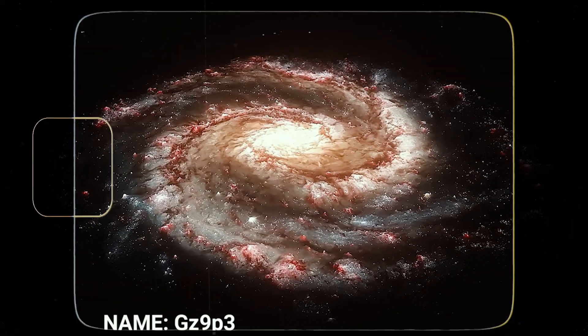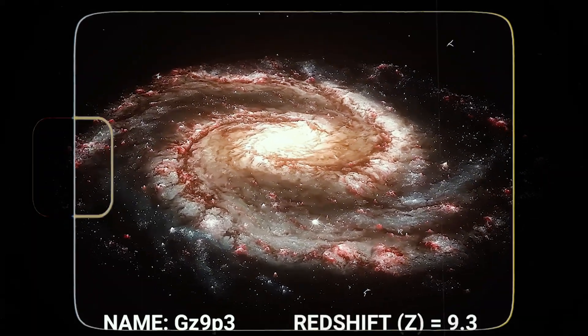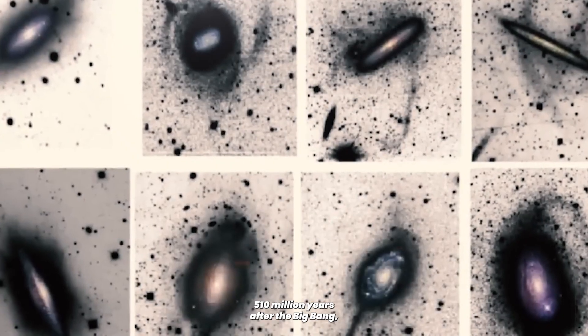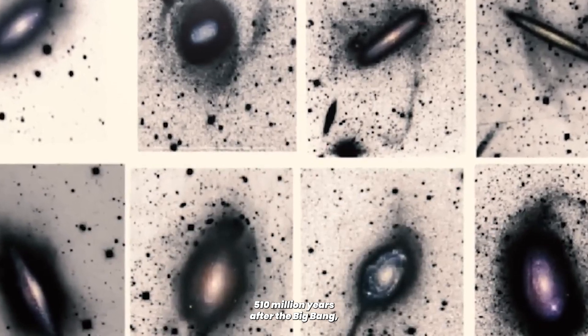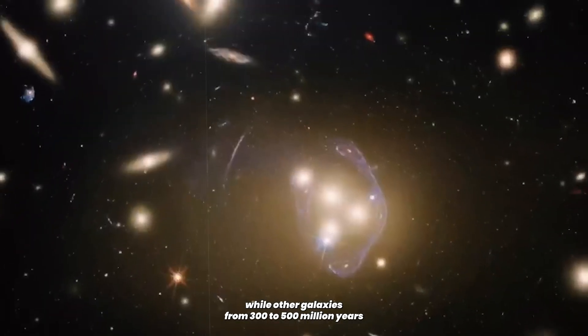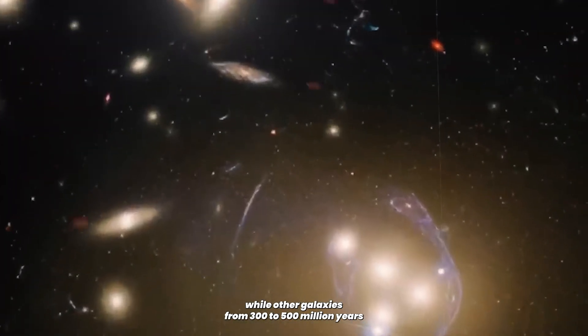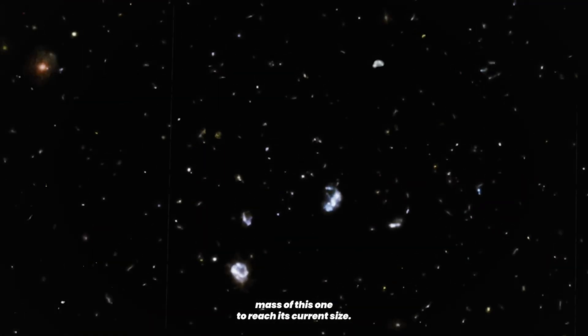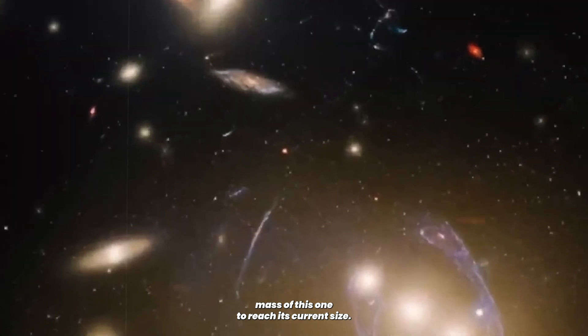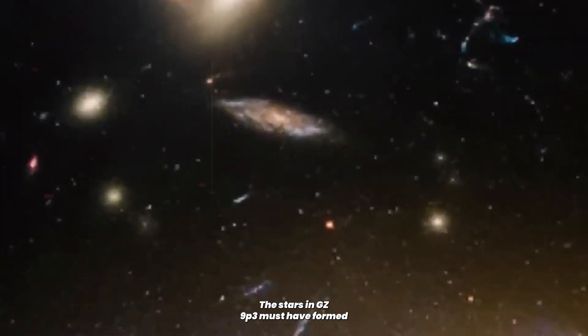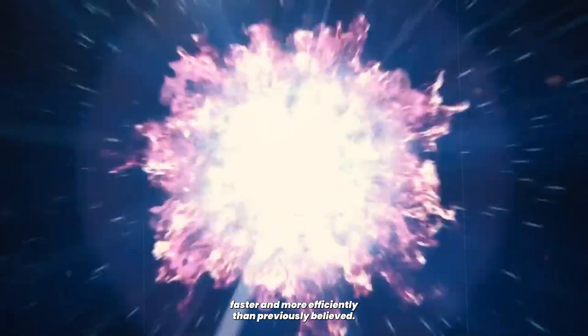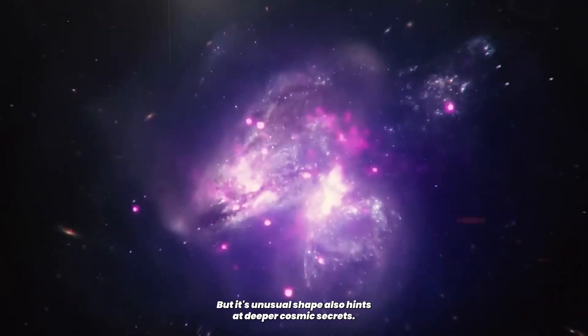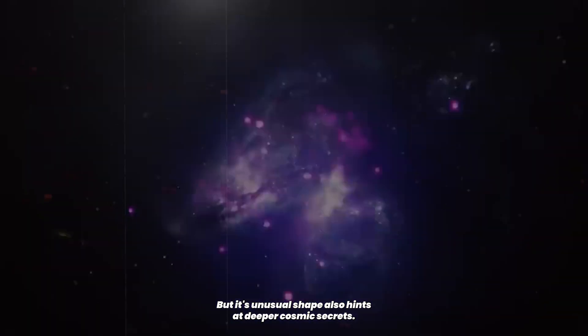Named GZ9P3, this galaxy exists at a redshift of 9.3, meaning we are seeing it as it was just 510 million years after the Big Bang. While other galaxies from 300 to 500 million years post-Big Bang have been observed, none match the sheer mass of this one. To reach its current size, the stars in GZ9P3 must have formed faster and more efficiently than previously believed. But its unusual shape also hints at deeper cosmic secrets.